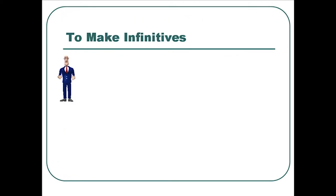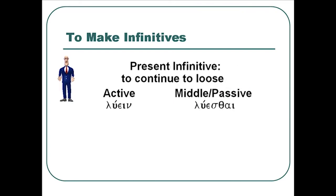Let's look at how these infinitives are actually formed. The present infinitive is translated 'to continue to loose.' There's an active form, luein, and a middle-passive form, luesthai. Just two forms — we've got the whole present. The -ein ending and the -esthai ending, and that's all there is. No first, second, third persons; no nominative, genitive, dative, accusative forms with singular and plural — just two simple forms: luein and luesthai.